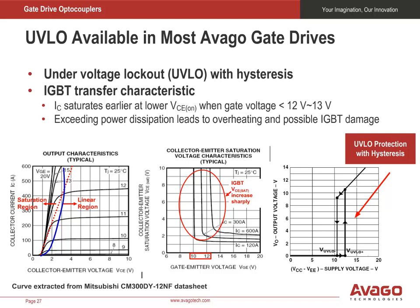The voltage around 13 volts is called the under-voltage lockout threshold. The actual under-voltage lockout threshold can vary from 11 volts to 13 volts. Another point to note is that the actual under-voltage lockout has a hysteresis, UVLO plus and UVLO minus. When VCC rises from 0 volts to VCC, the gate driver output is only allowed to turn on if VCC is higher than UVLO plus. When the VCC supply drops, the gate driver output is allowed to turn off after VCC drops below UVLO minus. This prevents the output from oscillation caused by noise.